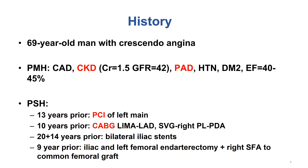The patient had a complex previous medical history. He had chronic kidney disease with GFR around 40, significant PAD with multiple previous revascularization procedures in the lower extremities, as well as significant coronary disease with PCI of the left main 13 years prior and coronary bypass graft surgery 10 years prior with LIMA to LAD and sequential vein graft to the right posterior lateral and the right posterior descending artery.